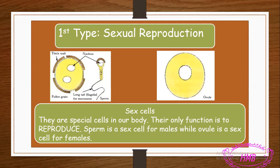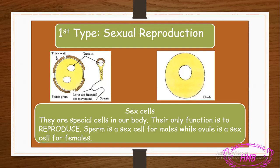As for the male, the cells found in men or boys are called sperm. Sperm is found in the body of males, and the ovule is found in the body of females. You will not find the ovule in the male, and you will not find the sperm in the female — every sex has its own cells.